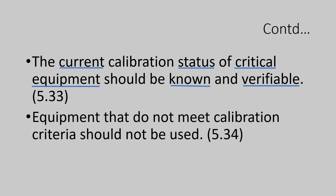Let us see what section 5.34 says: equipment that does not meet calibration criteria should not be used. This can be achieved by displaying a status board indicating that the particular equipment should not be used in manufacturing from the date on which it broke down. The peripheral issues to address are: when was it last failed, and what is the impact of this failure during that period? There should be a provision to investigate the batches manufactured before the breakdown for any adverse impact. In your SOP, there should be a provision to investigate for all such breakdowns.